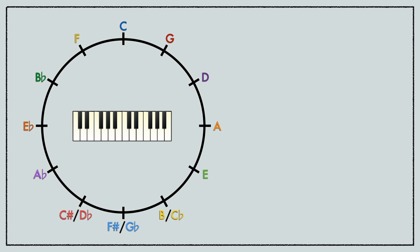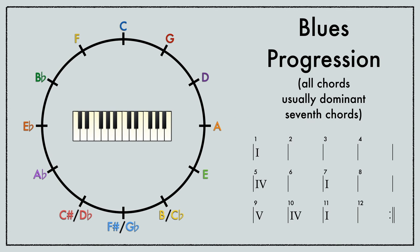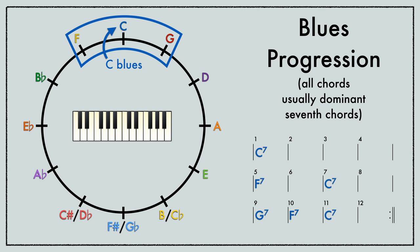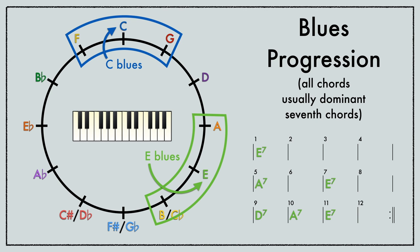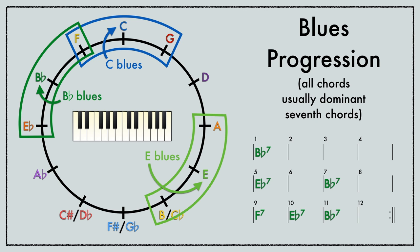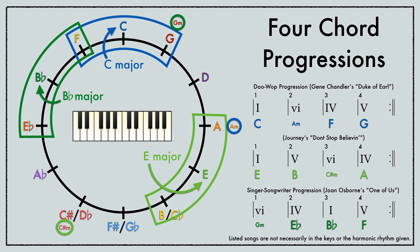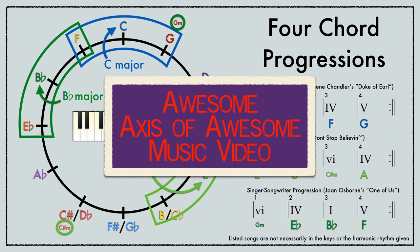So let's look at that circle of fifths again. If you ever learned a blues chord progression, you'll notice that its three chords are next to each other on the circle of fifths, with the key note in the middle. These are also three of the four chords used in the ubiquitous four-chord progressions used in popular music.